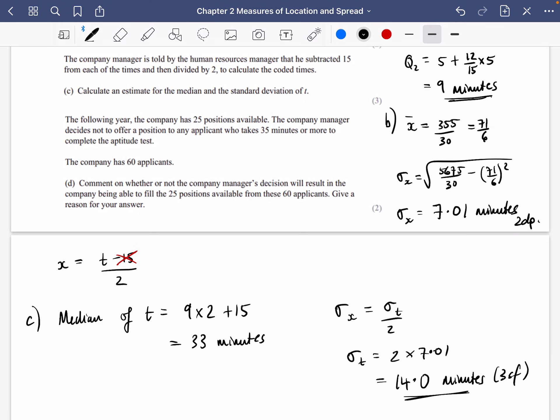It then says that the following year, the company has 25 positions available. The company manager decides not to offer a position to any applicant who takes 35 minutes or more to complete the aptitude test. The company has 60 applicants. Comment on whether or not the manager's decision will result in the company being able to fill the 25 positions available from these 60 applicants. Give a reason for your answer. So the person that they want to, they won't take is if they get 35 minutes or more to complete the aptitude test. And remember, this 35 minutes, is this X or is this T? Well, it's the true value. It's T.